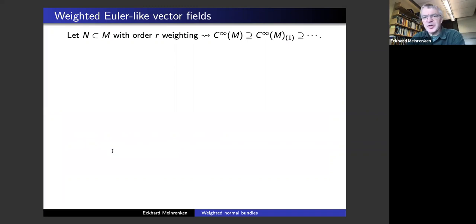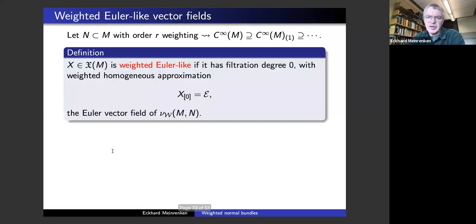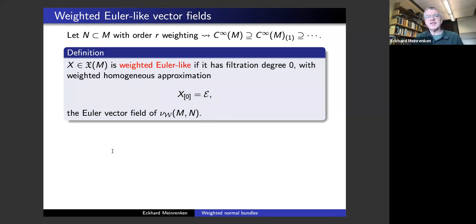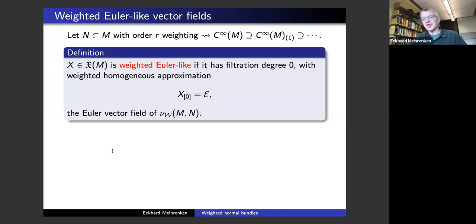The story with Euler-like vector fields goes through for these weighted normal bundles very beautifully. We have an order R weighting, we get the filtration on the algebra of functions, and then we have a definition of a weighted Euler-like vector field. A weighted Euler-like vector field is a vector field on M of filtration degree zero — meaning it preserves the filtration on the algebra of functions. It has a weighted homogeneous approximation on the weighted normal bundle, and this approximation should be the Euler vector field.